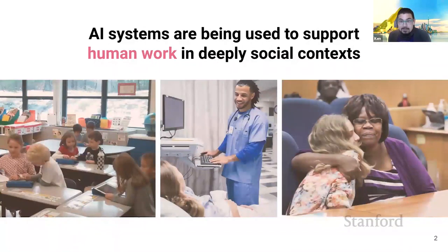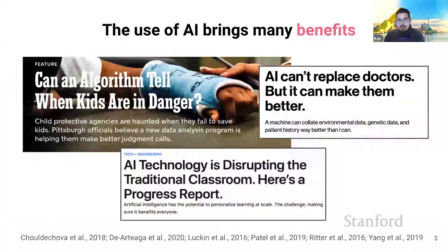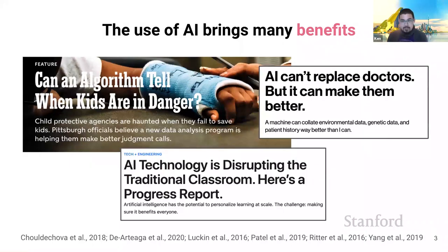AI systems are increasingly used to support human work in deeply social contexts, such as classroom teaching, healthcare, and social work. In these kinds of contexts, AI can automate routine parts of practitioners' work while freeing up time for activities they find more meaningful. And AI can also help practitioners make more informed decisions.